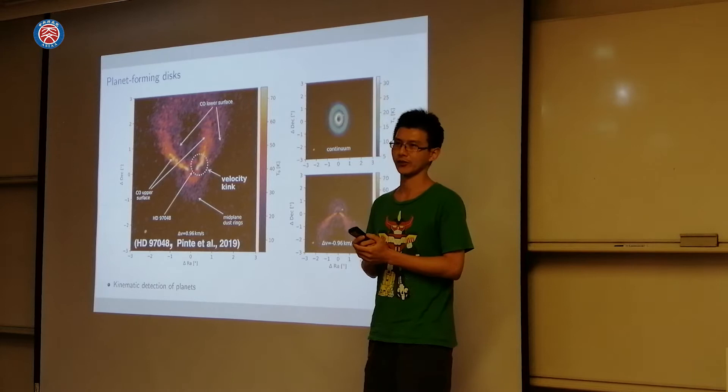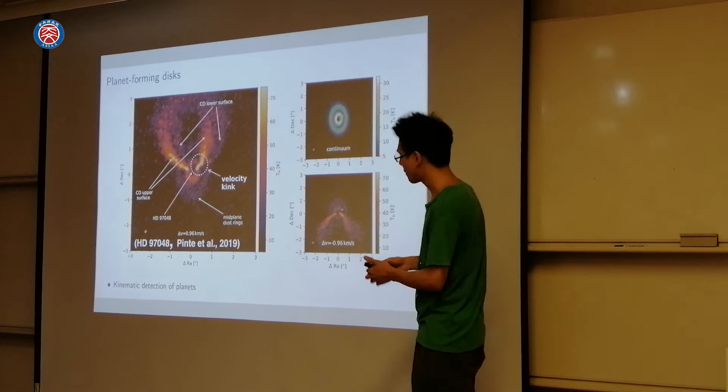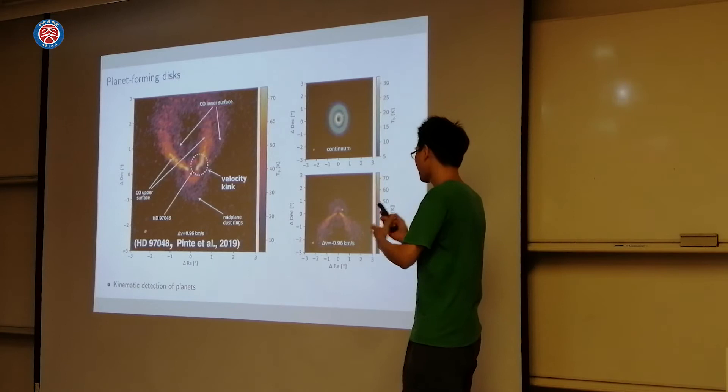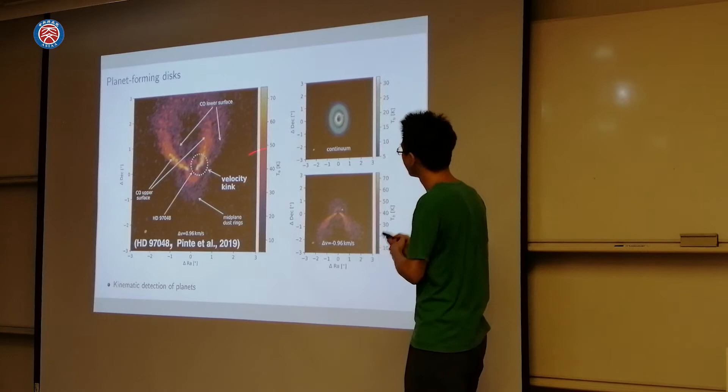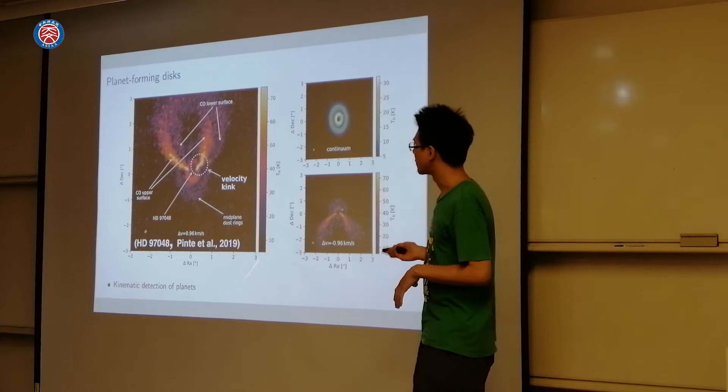This is also an ALMA observation showing the dust distribution — rings and gaps, as you can see. But in this observation they also have gas kinematics. By analyzing the gas kinematics, they can infer the likely presence of a planet that causes these velocity kinks, which happen around the gap. So this is very strong evidence of ongoing planet formation in a young protoplanetary disk, evidenced by both gas kinematics and the continuum dust emission.